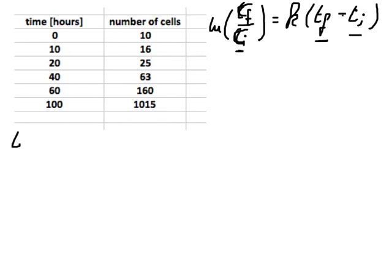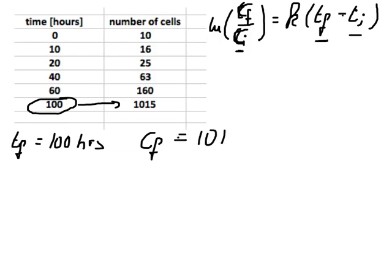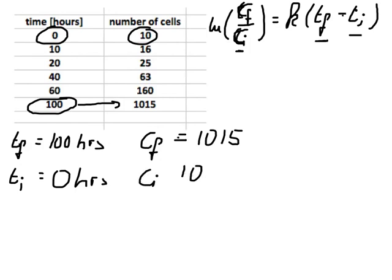We choose a t final, let's say we go for 100 hours, and the corresponding number of cells at 100 hours, so that would be our Cf, our cell count final, and that would be 1015 cells. Likewise we can do the same with the initial, so we go for a time initial of zero hours and the corresponding cell number at this time point, so that would be 10.